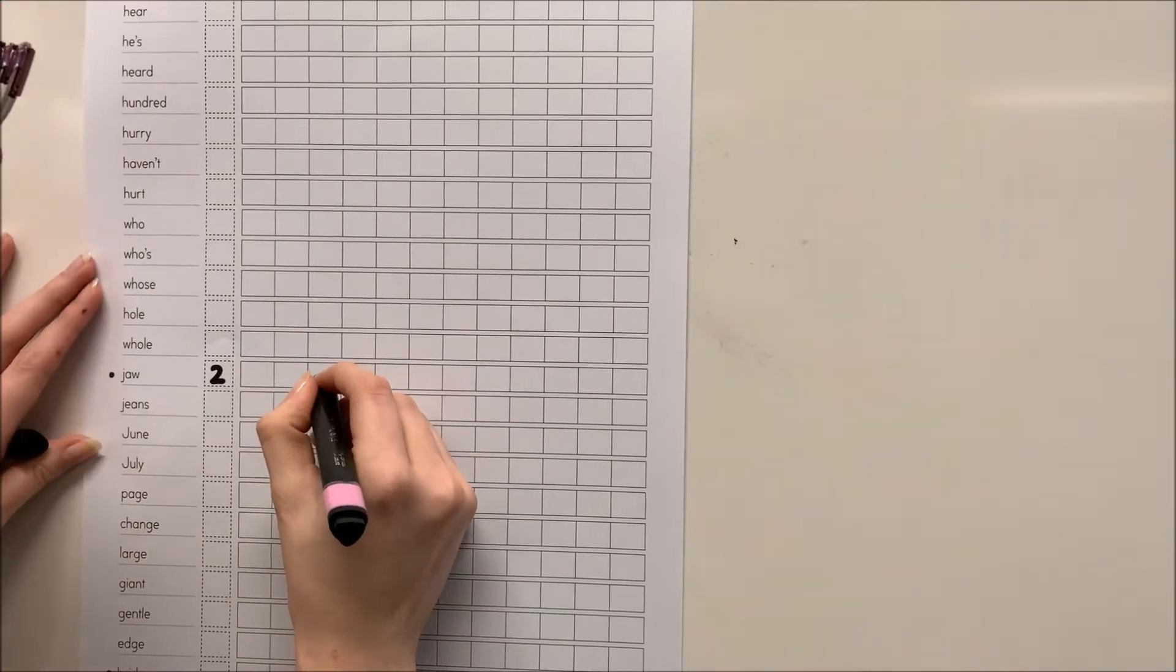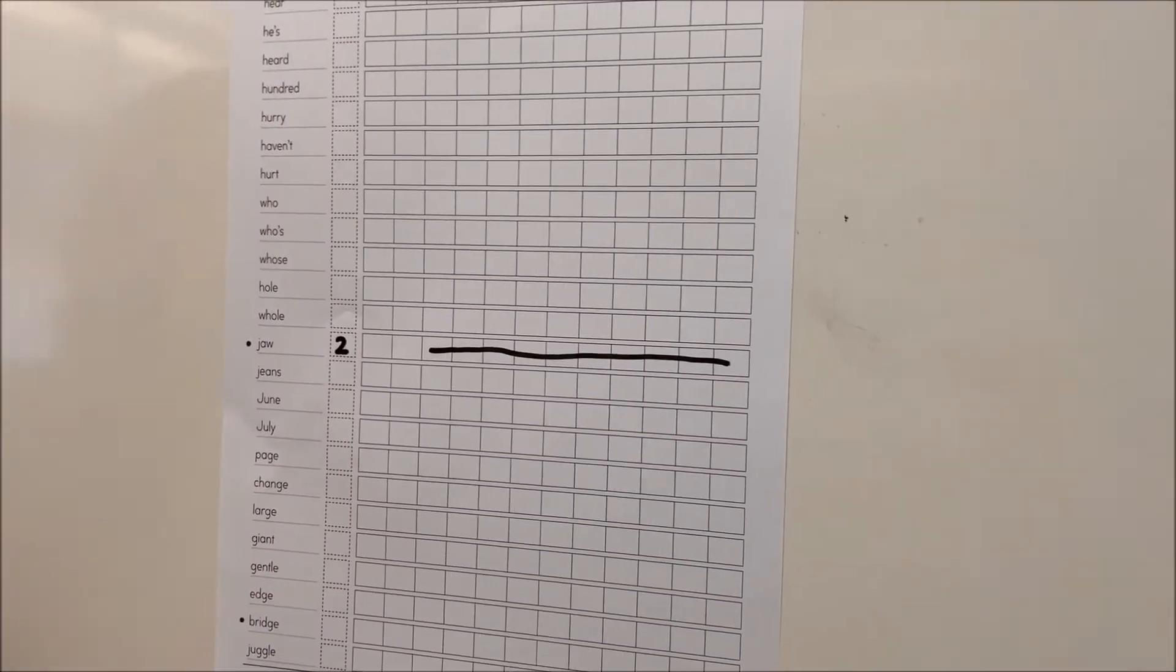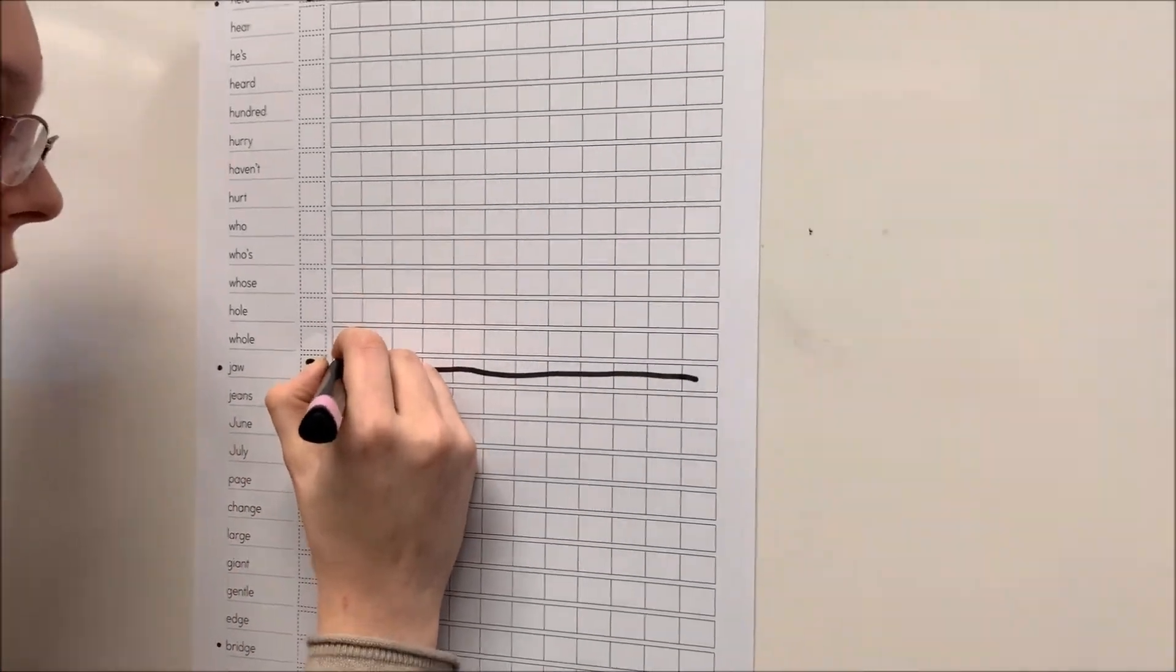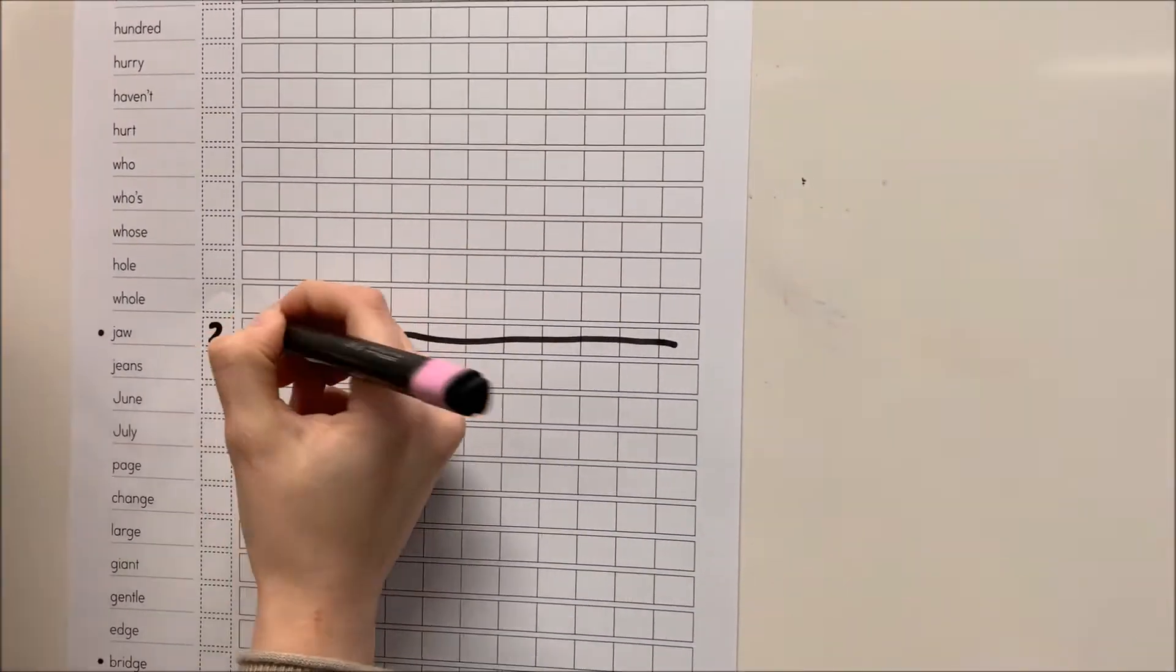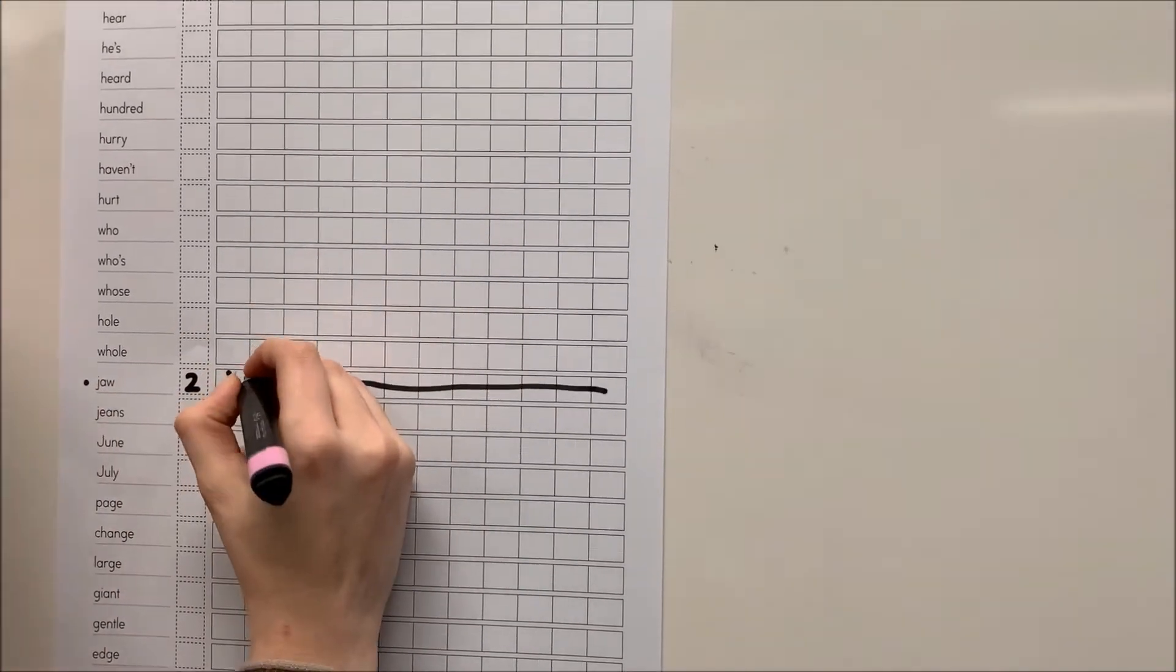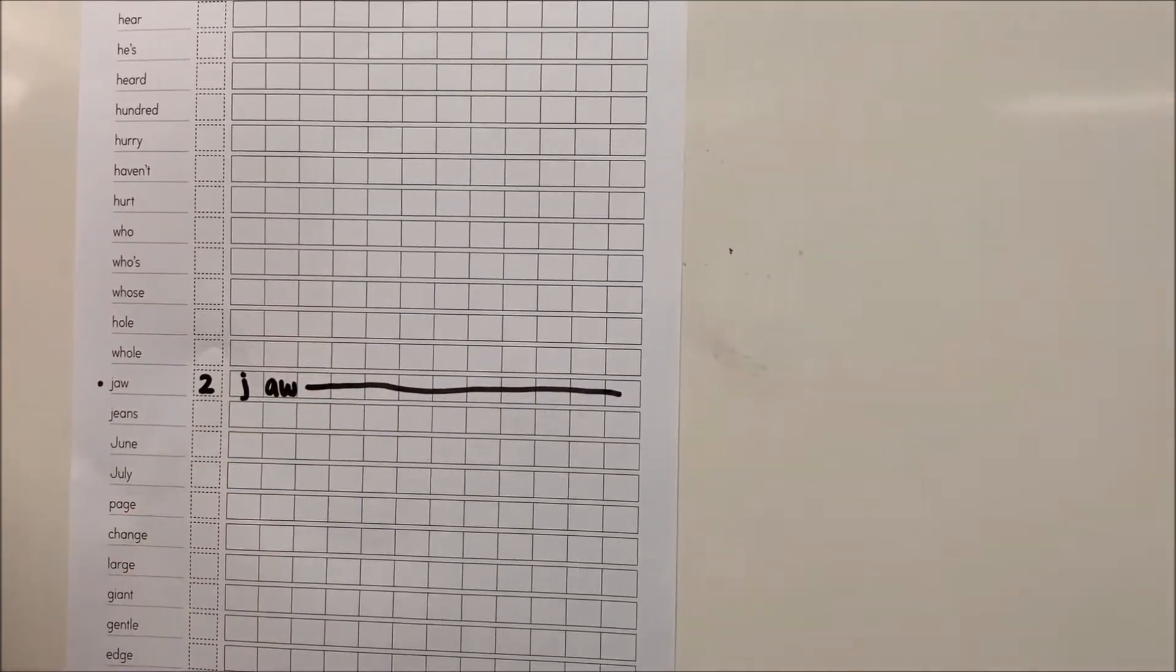I'm going to cross out all the other boxes because I know I don't need them. The first sound I hear is J, shown by a J this time, so J is going to have its own box. The second sound is A-W, which I'm going to put in another box because they are two letters making only one sound.